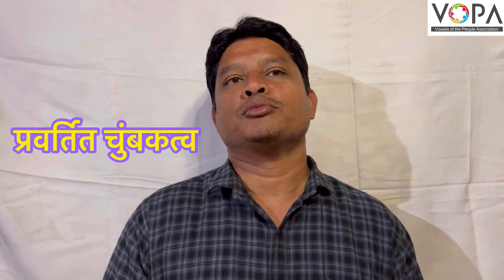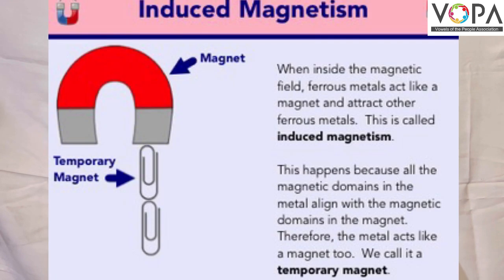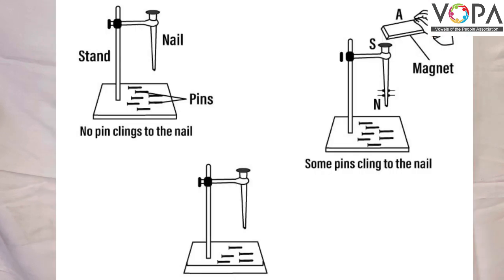Induced magnetism. Fix a powerful bar magnet to a stand as shown in the figure. Fix an iron bar at a short distance below the magnet. Take iron filings near the iron bar. What do you see?